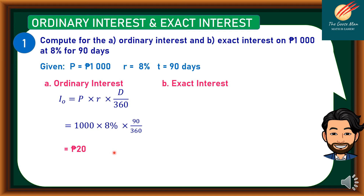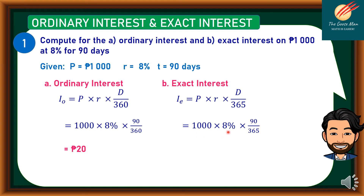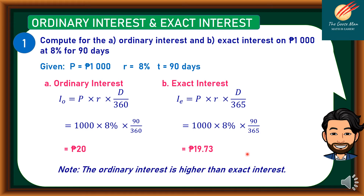For letter B, let's find the Exact Interest. I sub E is equal to Principal times Rate times D over 365. Substituting the values: 1,000 times 8% times 90, all over 365. Using our calculator, the value is equal to P19.73. Take note that the Ordinary Interest is higher than Exact Interest because P20 is greater than P19.73.